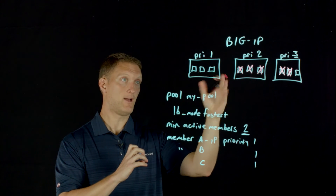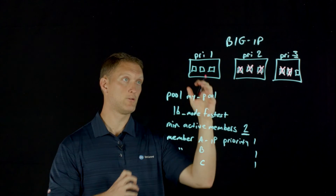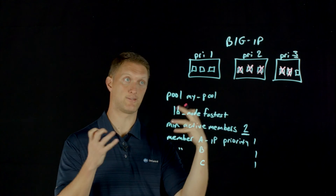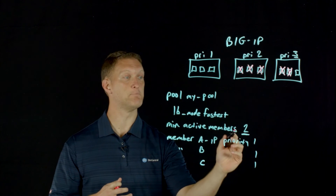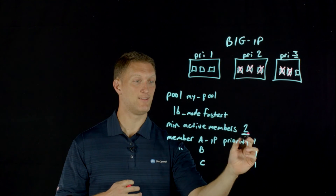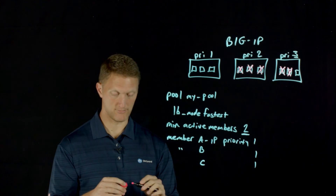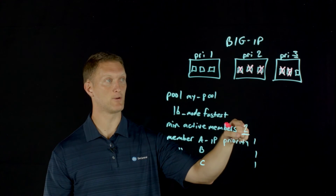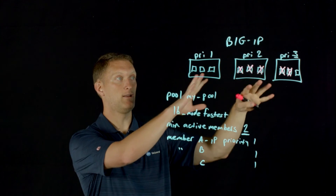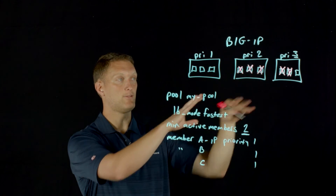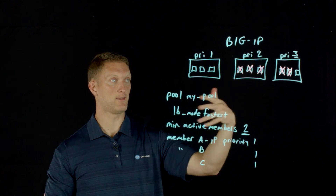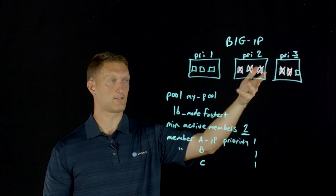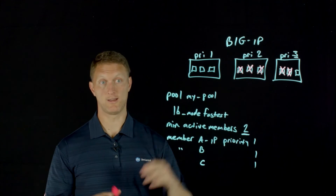As pool members go down in a priority group, traffic is either load balanced there or not based on the minimum active members number. You can see that as you change this number, the way that traffic gets load balanced is going to change as well.